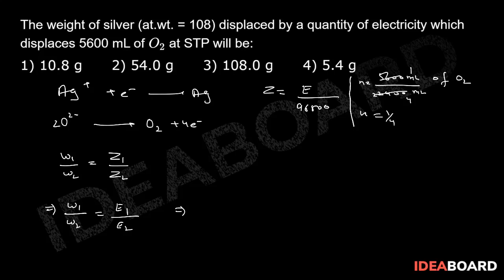So N is 1 by 4. If N is 1 by 4, then N equals given mass by molar mass. So 1 by 4 equals W1 by 32, so W1 is 8 grams. Now E1 of oxygen will be 32 by 4 because there are 4 electrons, so this is again 8.